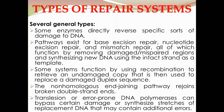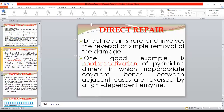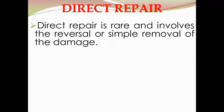That was a brief overview of the different types of DNA repair systems. Now we will discuss these types in detail. The first category is direct repair. In the case of direct repair, the damaged part of the DNA is replaced by the normal sequence. Direct repair involves the reversal or simple removal of the damage.